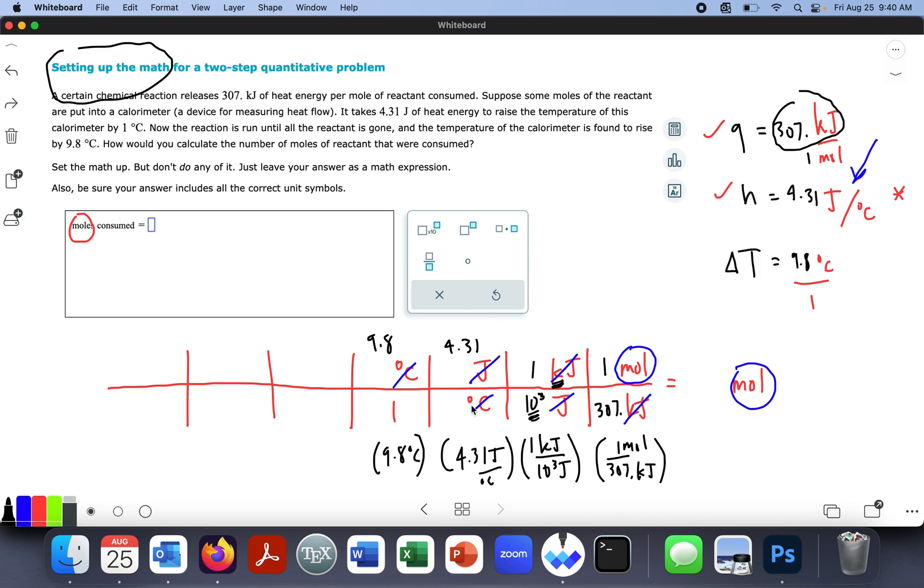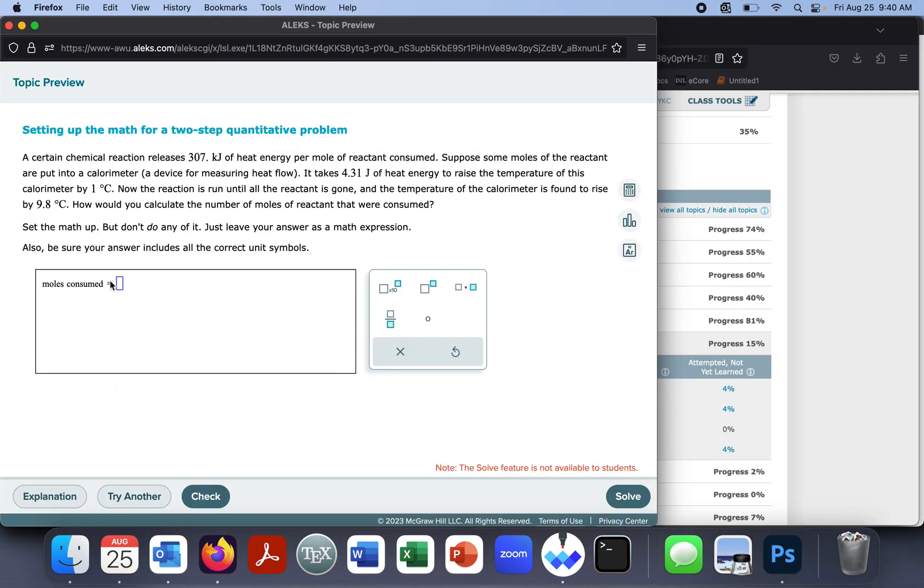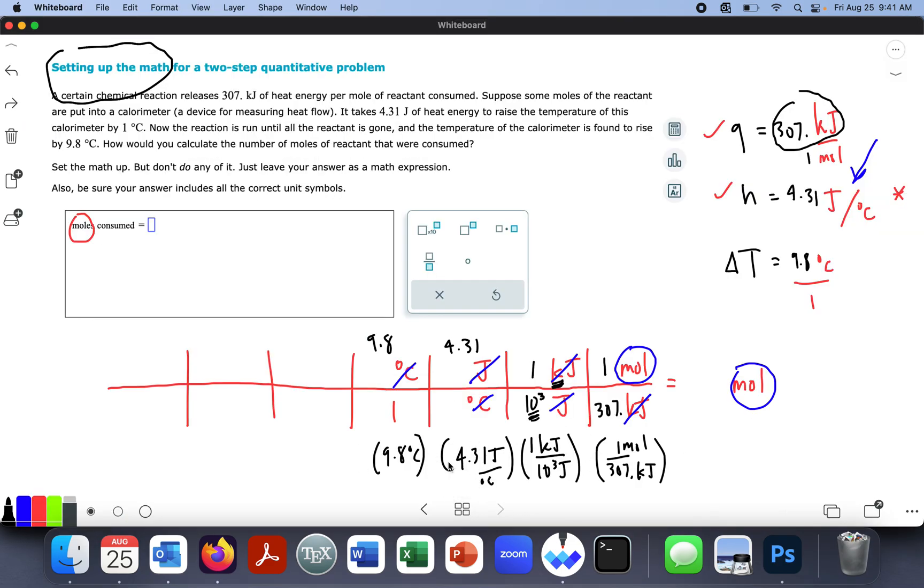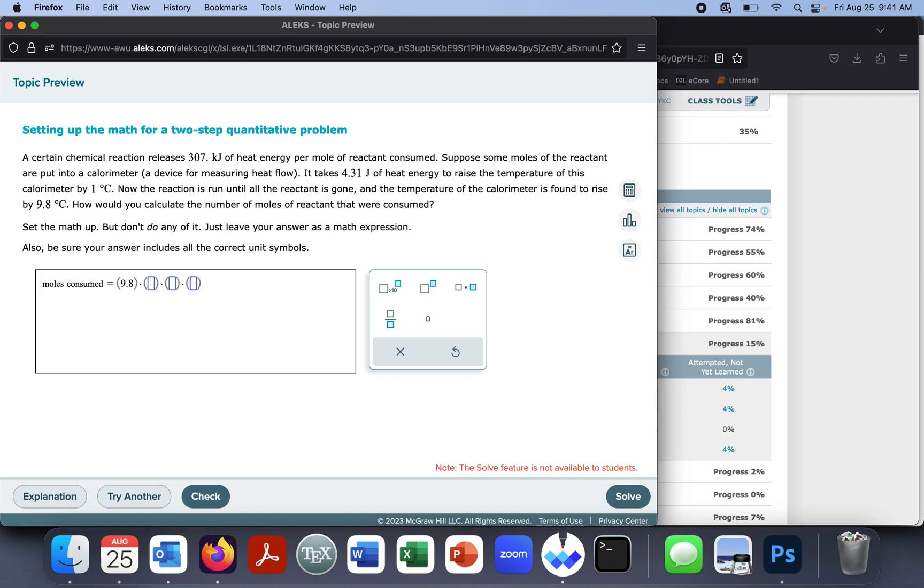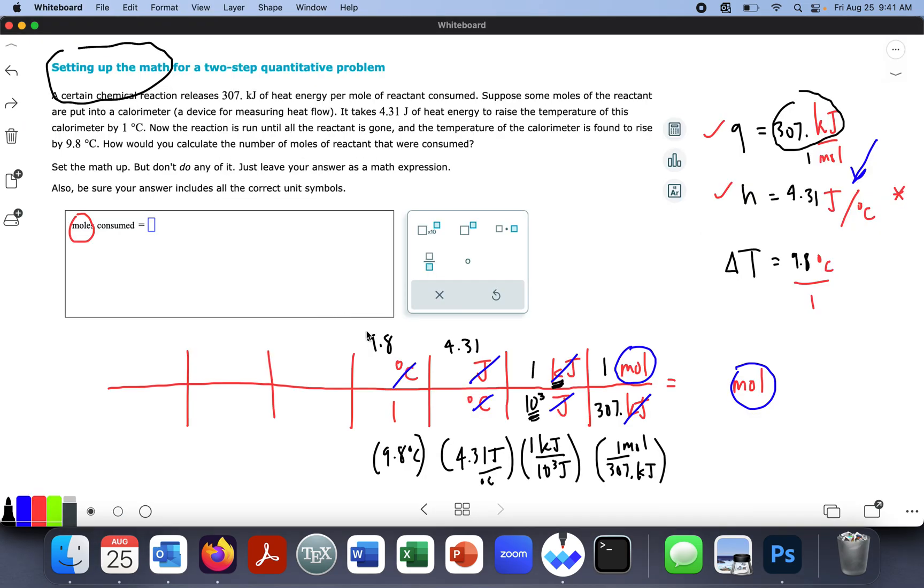Now I'm going to go back and, actually, you know what, I'm going to go back and forth. I'm going to type this in because I want to do it the way I did it. There's lots of ways to form this, parentheses, parentheses, parentheses, parentheses. That's what I had. Let's go back and forth. Yep, there's four of them, 9.8, 9.8 degrees Celsius. What's the next one? 4.31 joules per, 4.31 joules per degrees Celsius. And the next one was a fraction, 1 kilojoule over 1,000 joules.